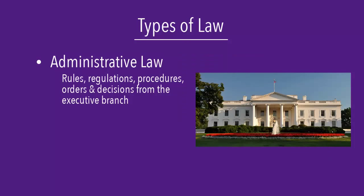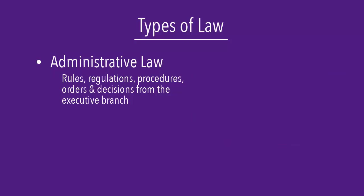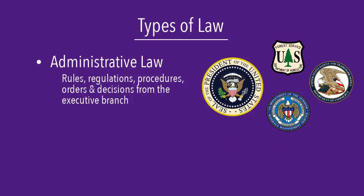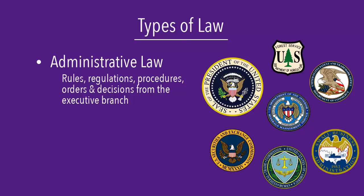Administrative law derives from the executive branch. At the federal level, this includes the President of the United States, agencies of the executive branch, and independent regulatory agencies. Administrative law comes in the form of rules, regulations, procedures, orders, and decisions.